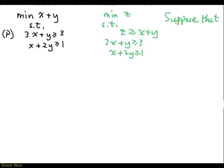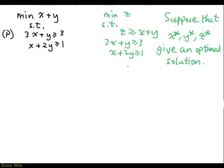Why is that? Suppose that x star, y star, z star give an optimal solution. The first thing to observe is that z star must be the same as x star plus y star. Because of the first constraint, z star can be strictly bigger than x star plus y star, or z star can be equal to x star plus y star. But we are looking at an optimal solution — one that has the minimum possible value for z. If z star is bigger than x star plus y star, we can do better by setting z star equal to x star plus y star. So in an optimal solution, z star has to equal x star plus y star.